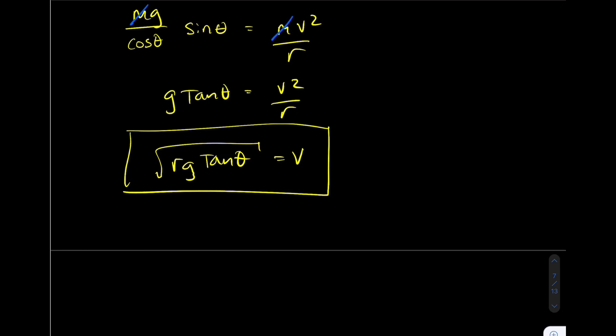A car can go around a frictionless banked ramp as long as it's at an angle. Notice this does not work for an angle of zero — as theta gets smaller, the whole expression approaches zero, which means the car can no longer maintain circular motion on a flat surface.